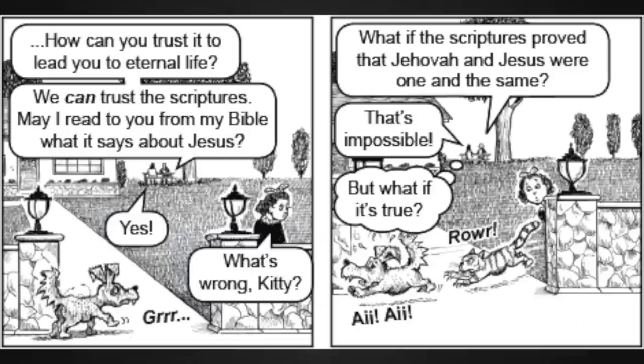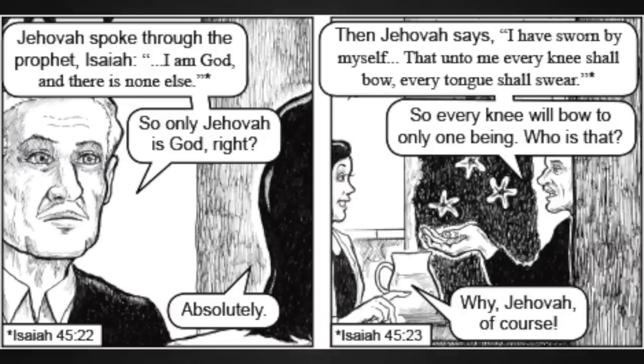Anyways, the householder says, What if the scriptures proved that Jehovah and Jesus were one and the same? Melissa says, That's impossible. And then thinks to herself, But what if it's true? It's not. As I said earlier, the Bible has some loose support for the Trinity because the wording was changed by monks hundreds of years later to give the impression of support for it. One of the few things Jehovah's Witnesses get correct. Page 13. The householder says, Jehovah spoke through the prophet Isaiah. I am God and there is none else. So only Jehovah is God, right? She says, Absolutely. He says, Then Jehovah says, I've sworn by myself that unto me every knee shall bow, every tongue shall swear. So every knee will bow to only one being. Who is that? She says, Why Jehovah, of course.